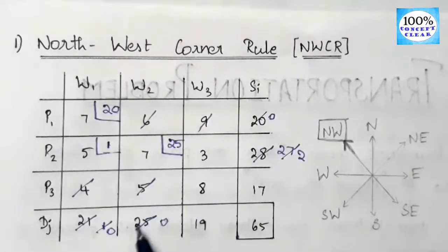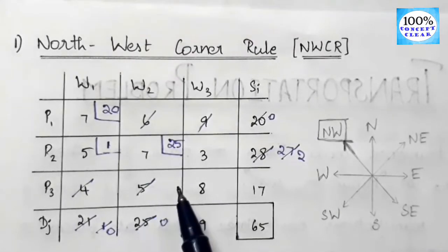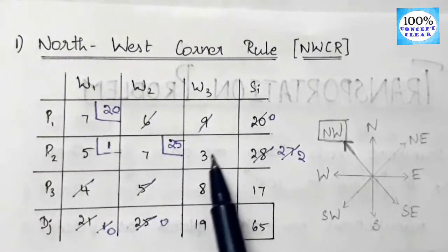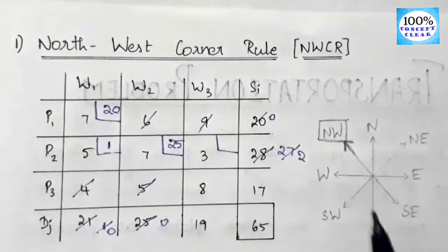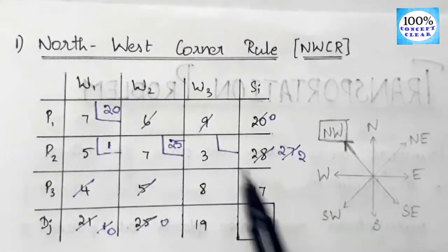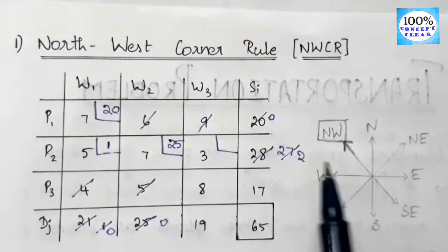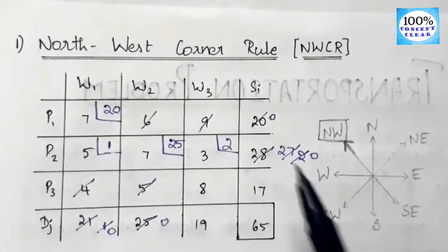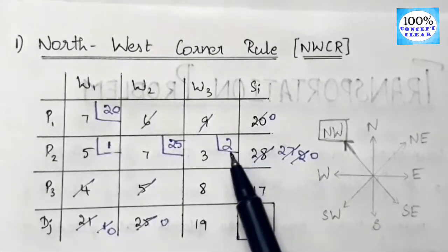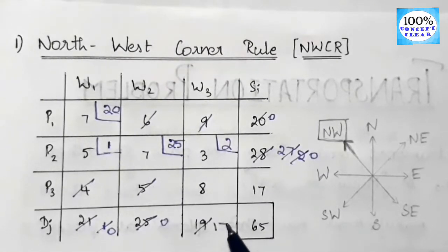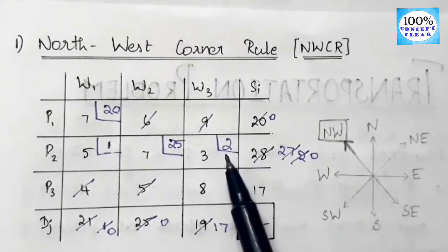The next northwest corner cell has cost 3 (P2–W3). Supply is 2, demand is 19; minimum is 2, so we allocate 2 here. Cancel P2's row. Remaining demand for W3 is 19 − 2 = 17.